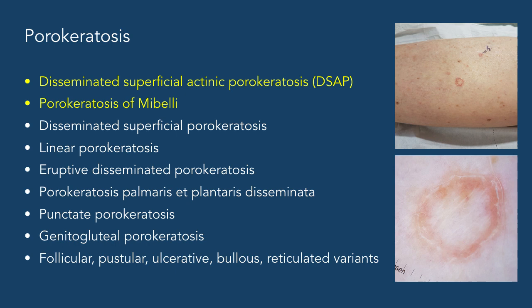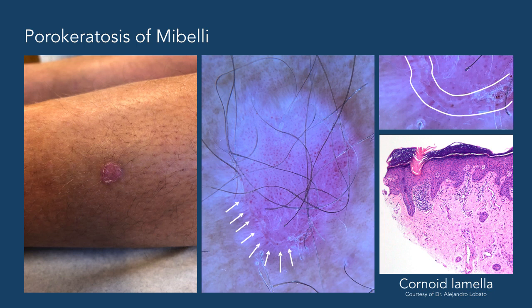Porokeratosis of Mibelli are single or a few erythematous scaly patches that are more frequently seen in men. They're usually 1–2 cm in diameter, but can have a variable size from a few millimeters to several centimeters in diameter. The scales are usually more prominent at the periphery, forming a keratotic rim. The central area is usually slightly atrophic, but can sometimes be scaly or hyperpigmented.